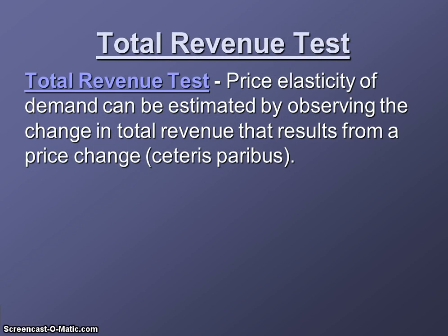The total revenue test of price elasticity helps us figure out if demand is elastic or inelastic by observing the change in total revenue when the price of a good changes, all else being constant — ceteris paribus means all else being equal. So if the only thing that changes in a market is the price of the good, and we know how many more or fewer people will buy when that price changes, then we can know what's going to happen to total revenue and therefore estimate price elasticity of demand for that good.